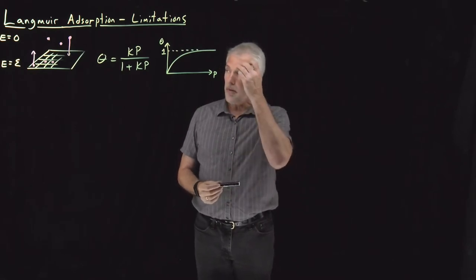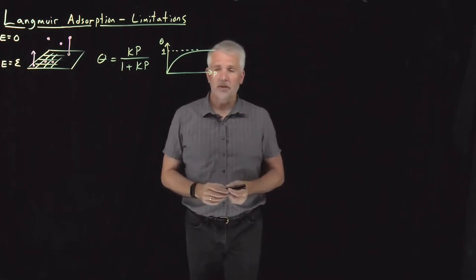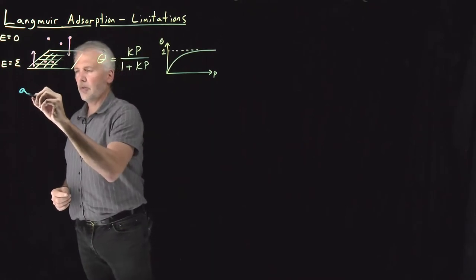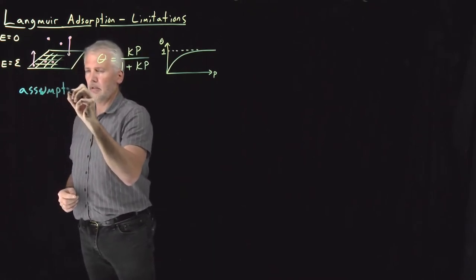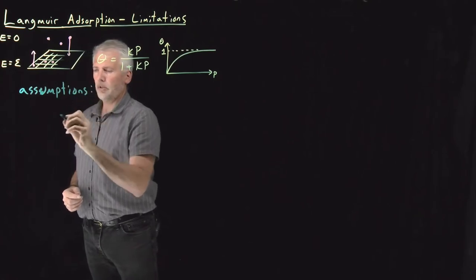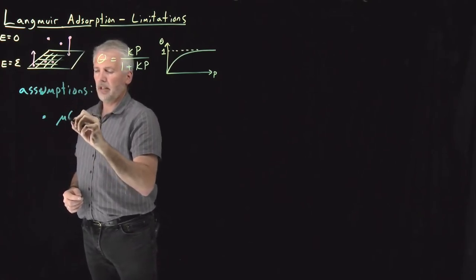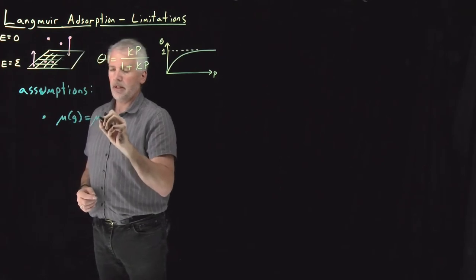So to see where the model breaks down, let's remind ourselves what some of the assumptions were that we used in deriving the model. So we've assumed a number of things.